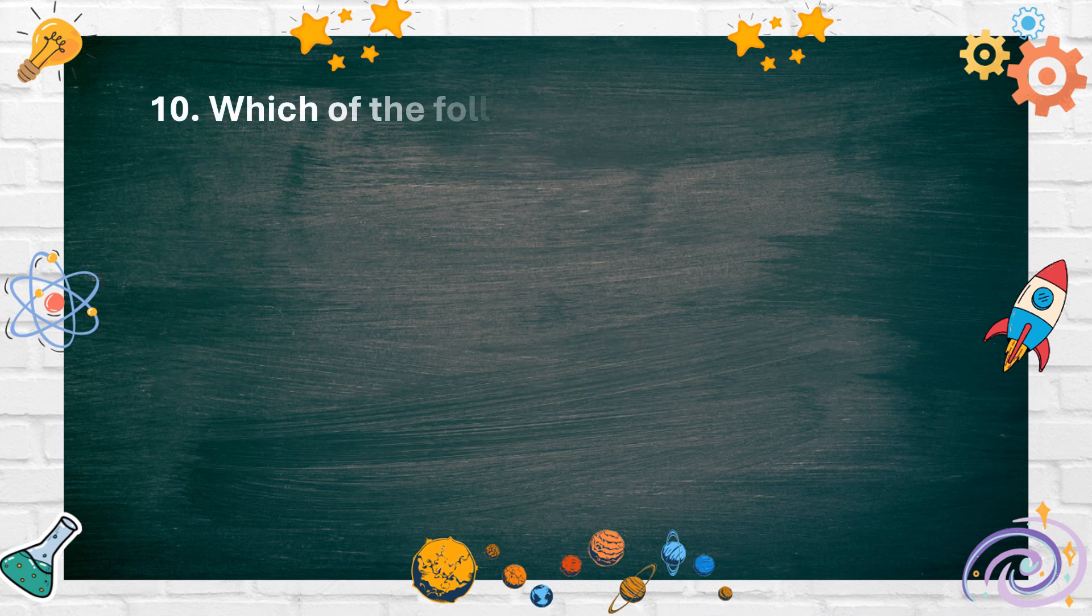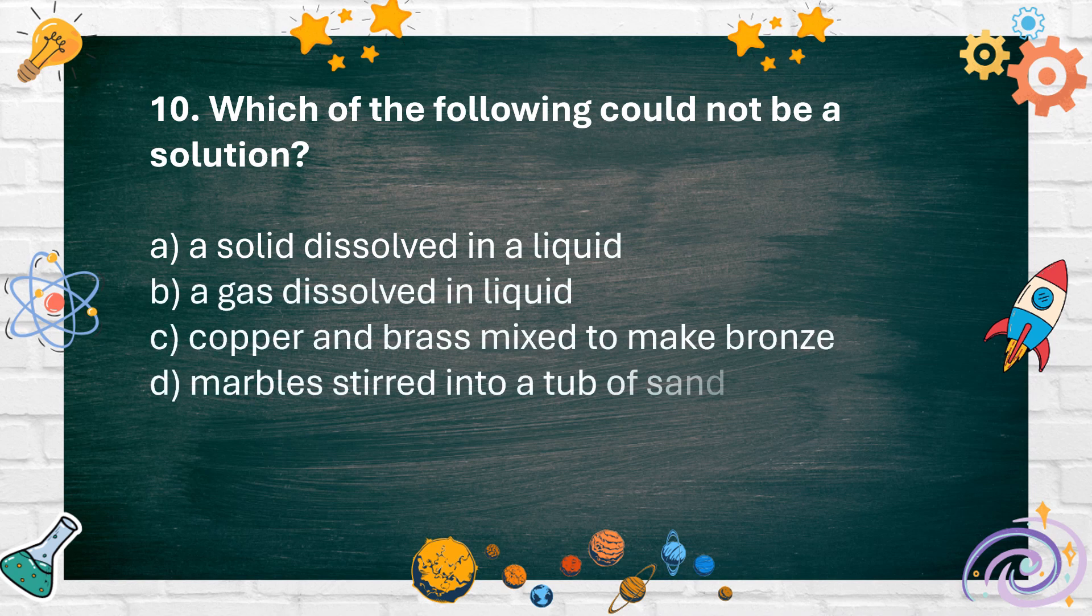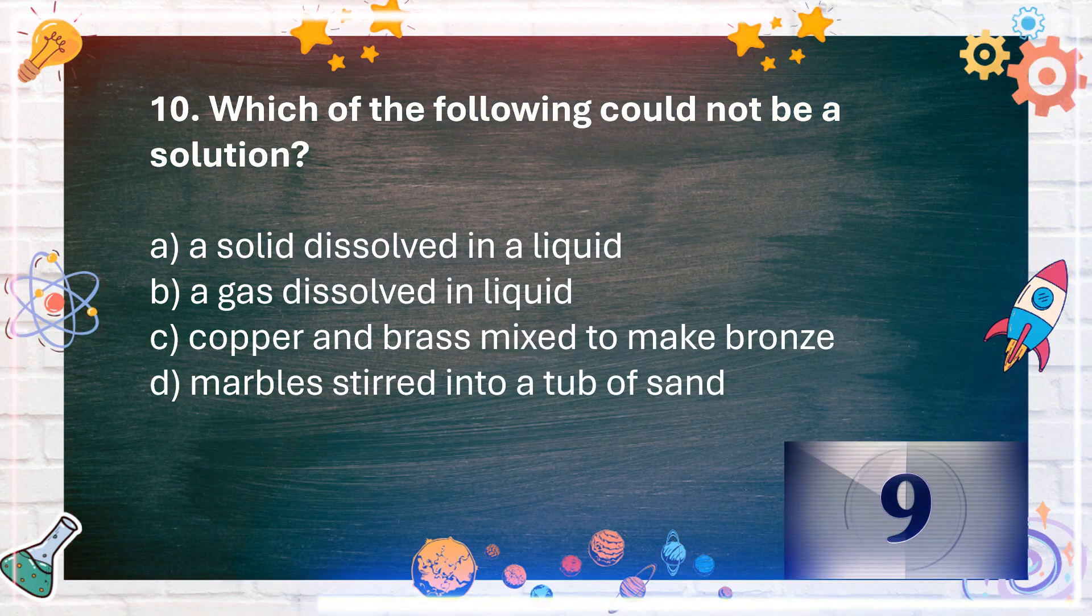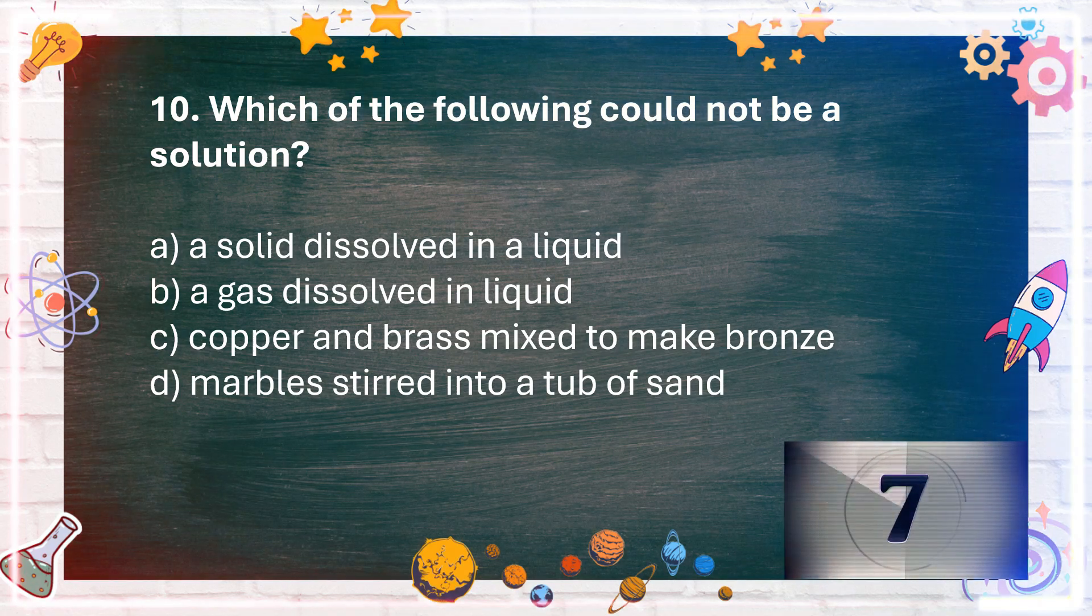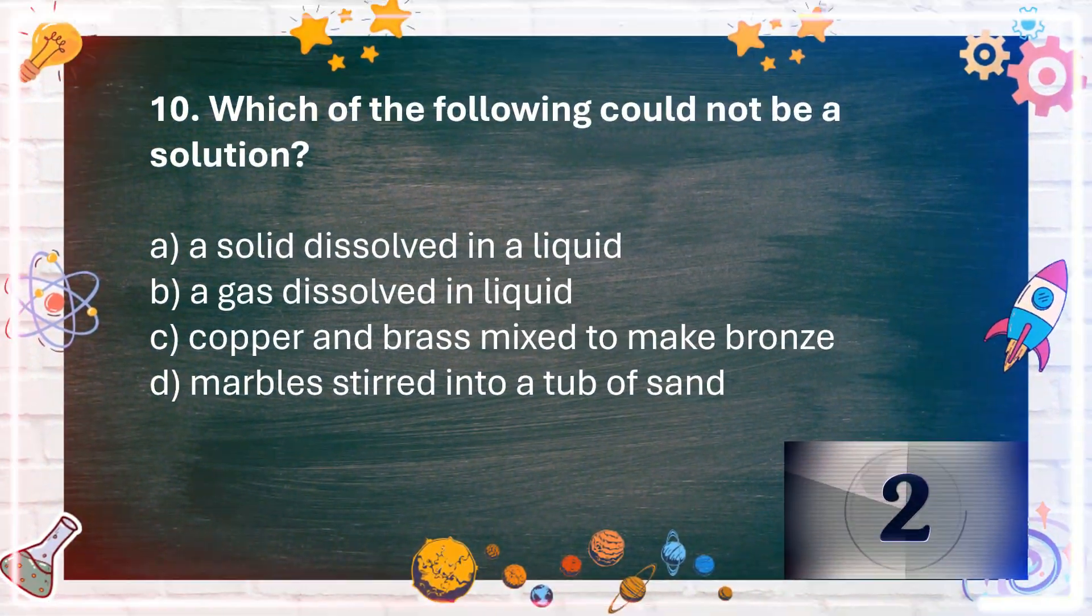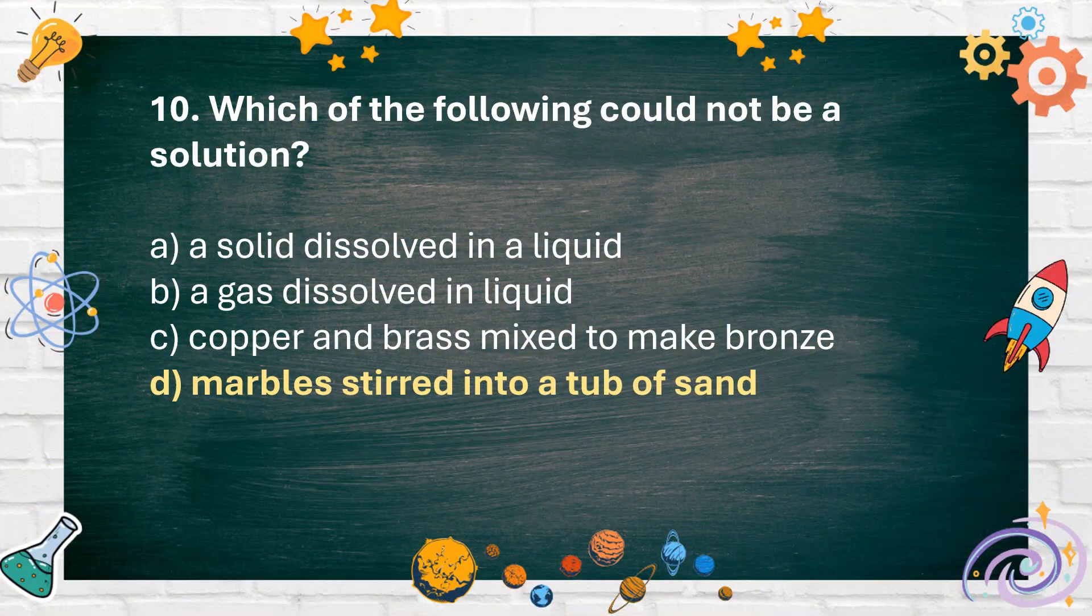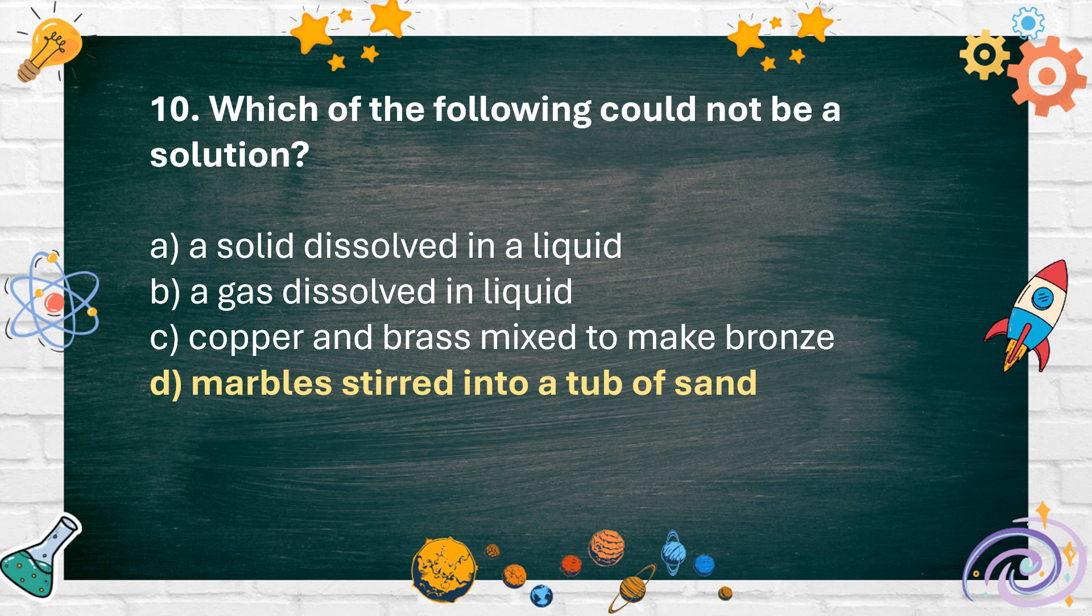Number 10. Which of the following could not be a solution? A. Solid dissolved in a liquid B. A gas dissolved in liquid C. Copper and brass mixed to make bronze D. Marbles stirred into a tub of sand. The answer is D. Marbles stirred into a tub of sand.